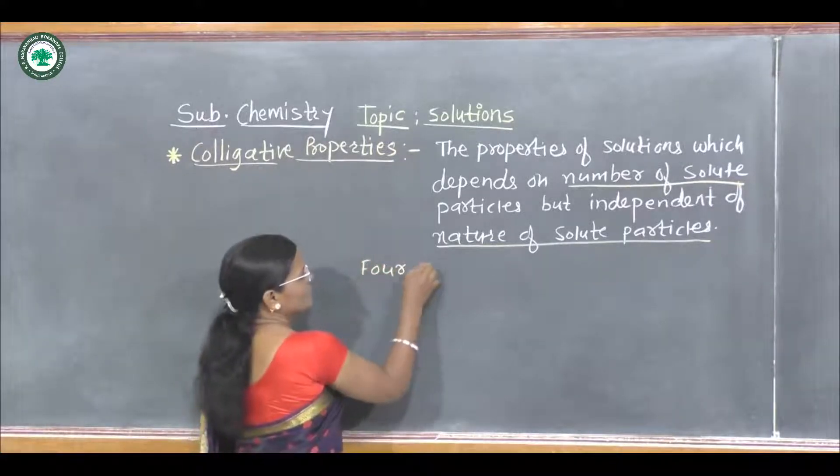Today we have to discuss the first property, that is vapor pressure lowering. Now let us consider a binary solution. A binary solution consists of two components: first is solute, and second is solvent.